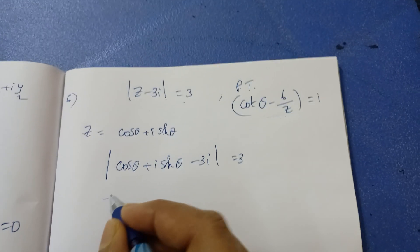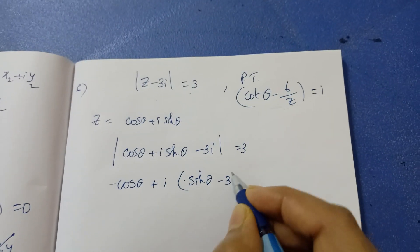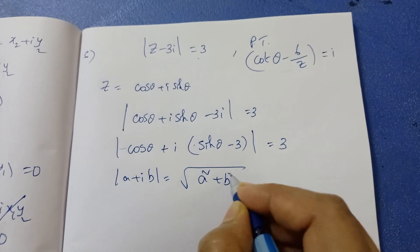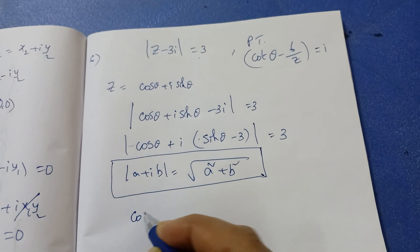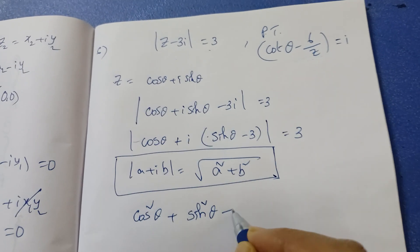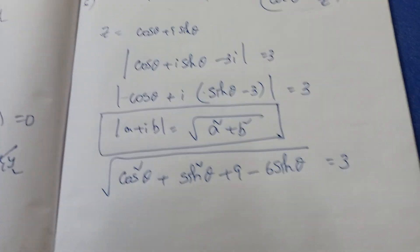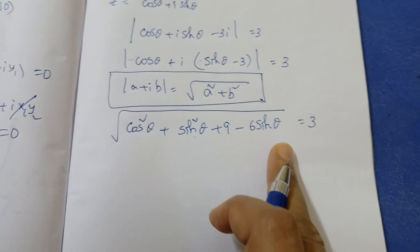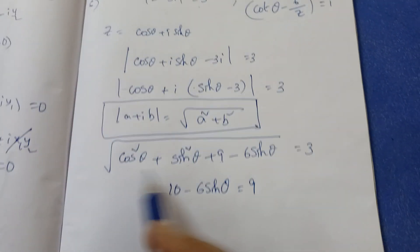Taking i as common from the imaginary terms: |cosθ + i(sinθ − 3)| = 3. Applying the modulus formula |a + ib| = √(a² + b²): √(cos²θ + (sinθ − 3)²) = 3. Expanding (sinθ − 3)² = sin²θ − 6sinθ + 9. Using cos²θ + sin²θ = 1, we get √(1 + 9 − 6sinθ) = 3, so √(10 − 6sinθ) = 3.